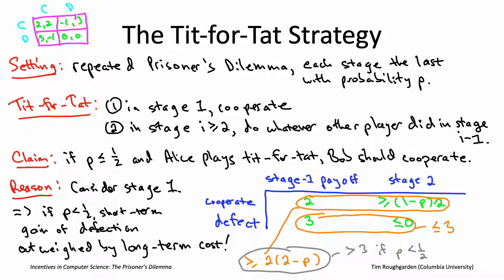Overall, this is a fairly satisfying mathematical story for why cooperation appears in repeated prisoner's dilemma situations in real life. The number of repetitions is often unknown or effectively random in real life applications — you don't necessarily know what will be the very last interaction with some other party. Furthermore, the tit-for-tat strategy resembles plausible real-life behavior; there are people who really do seem to play life more or less like some variation of tit-for-tat.